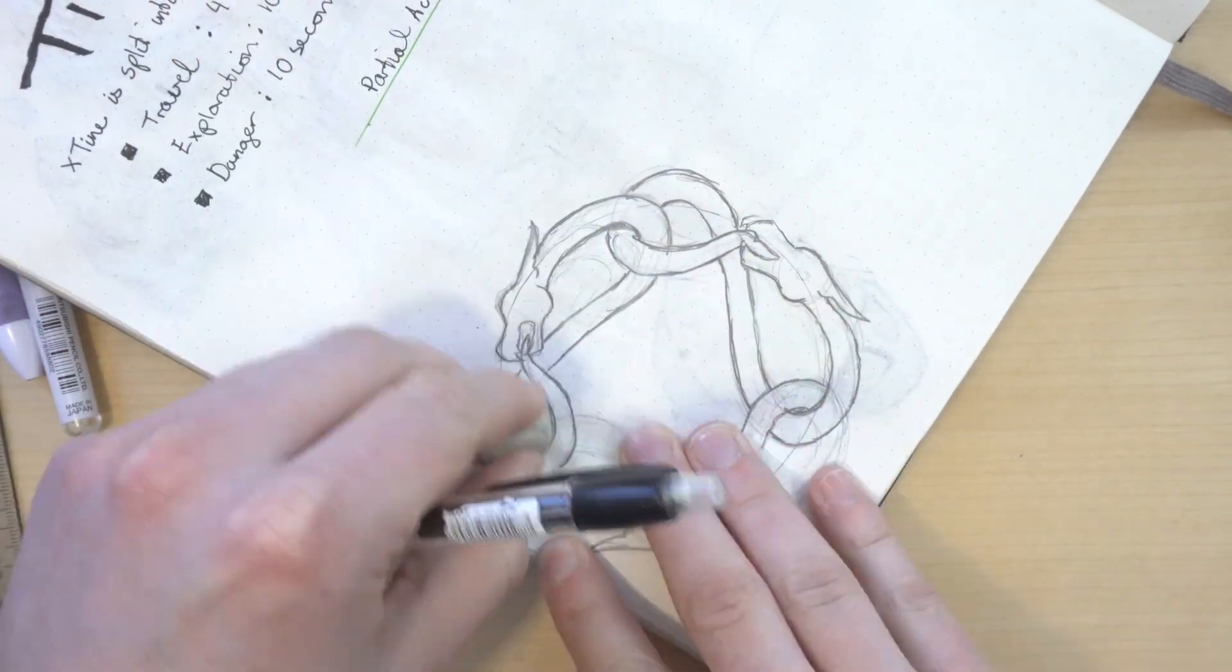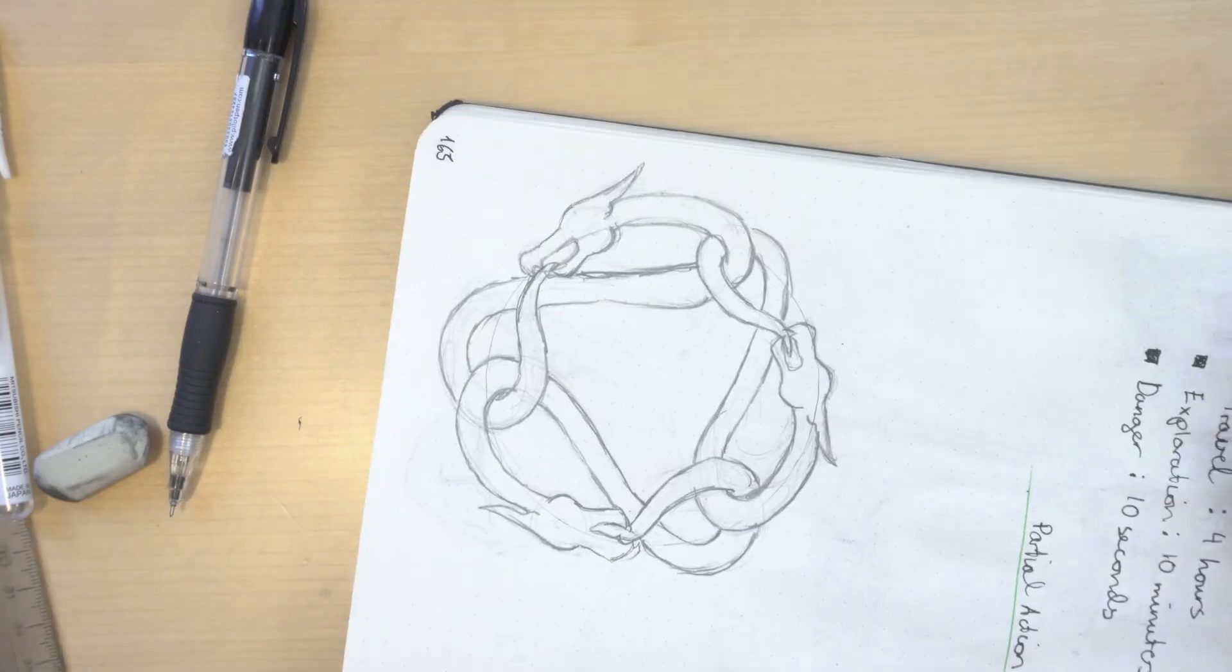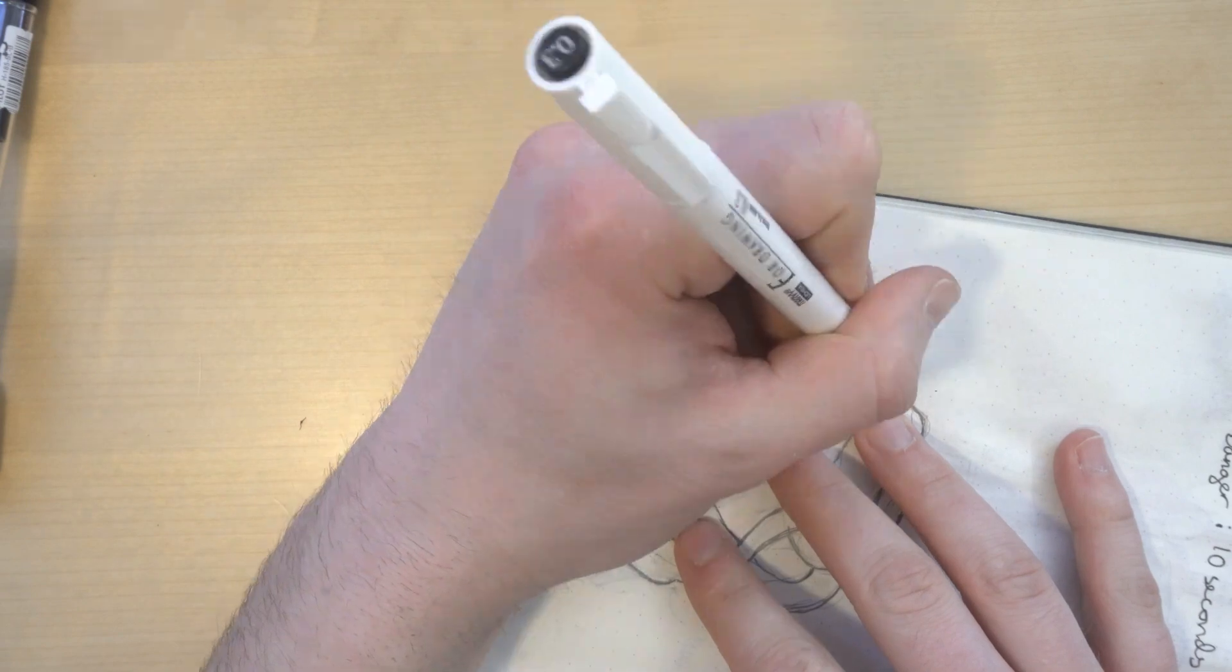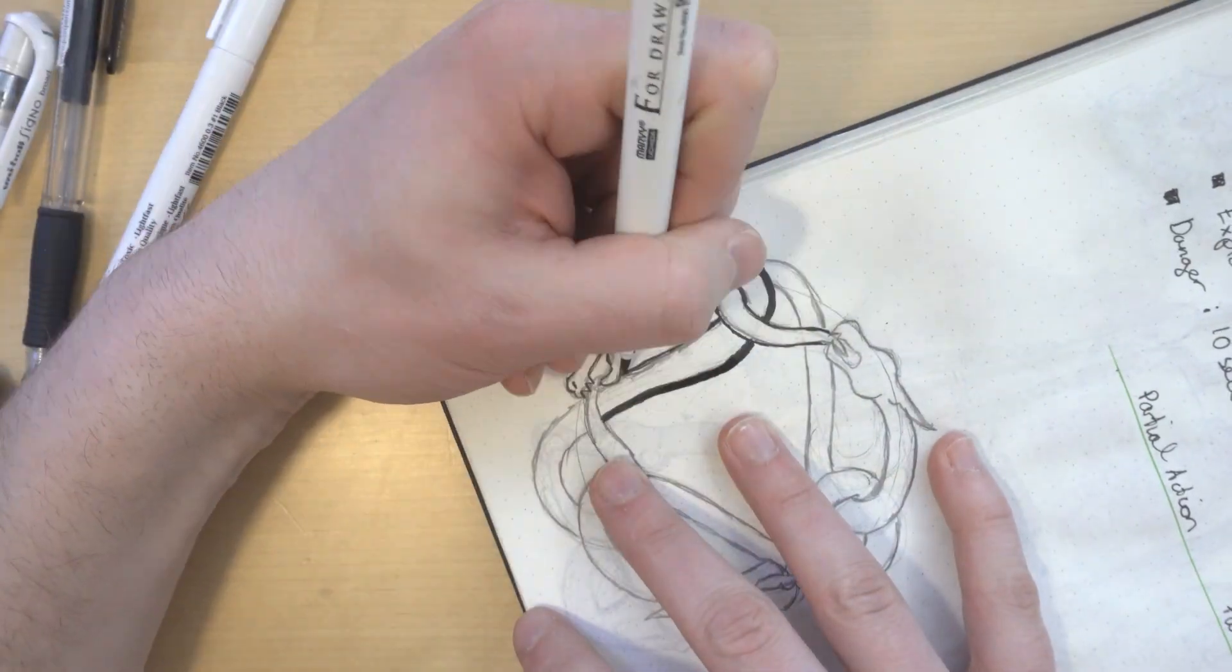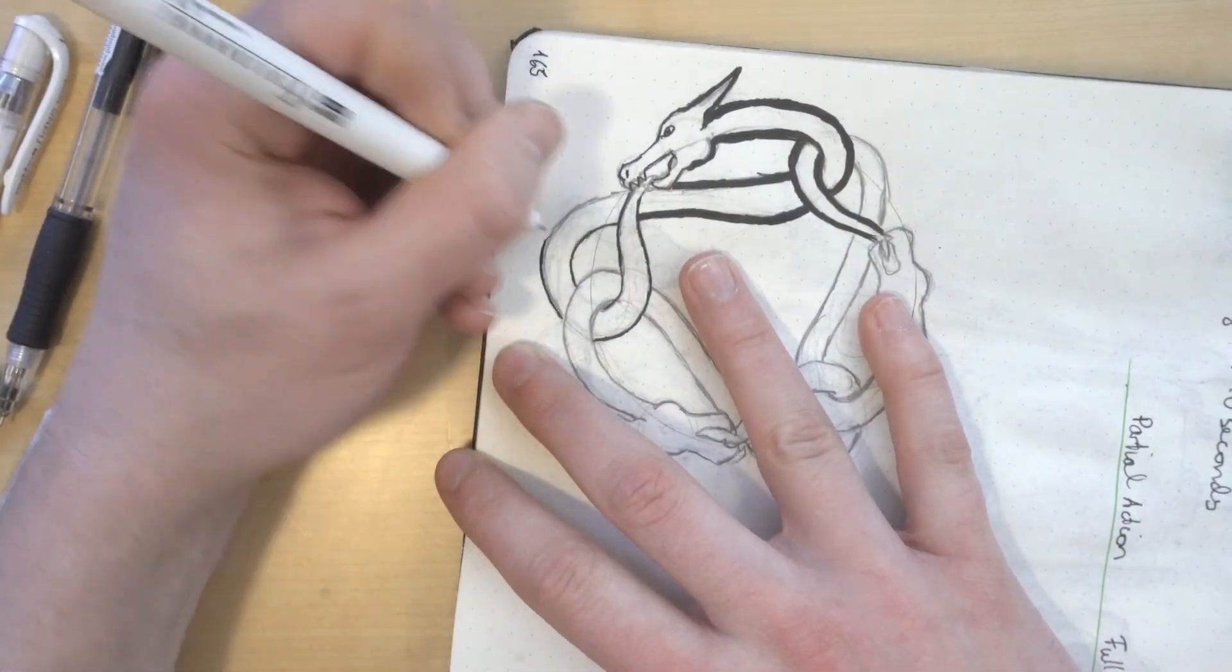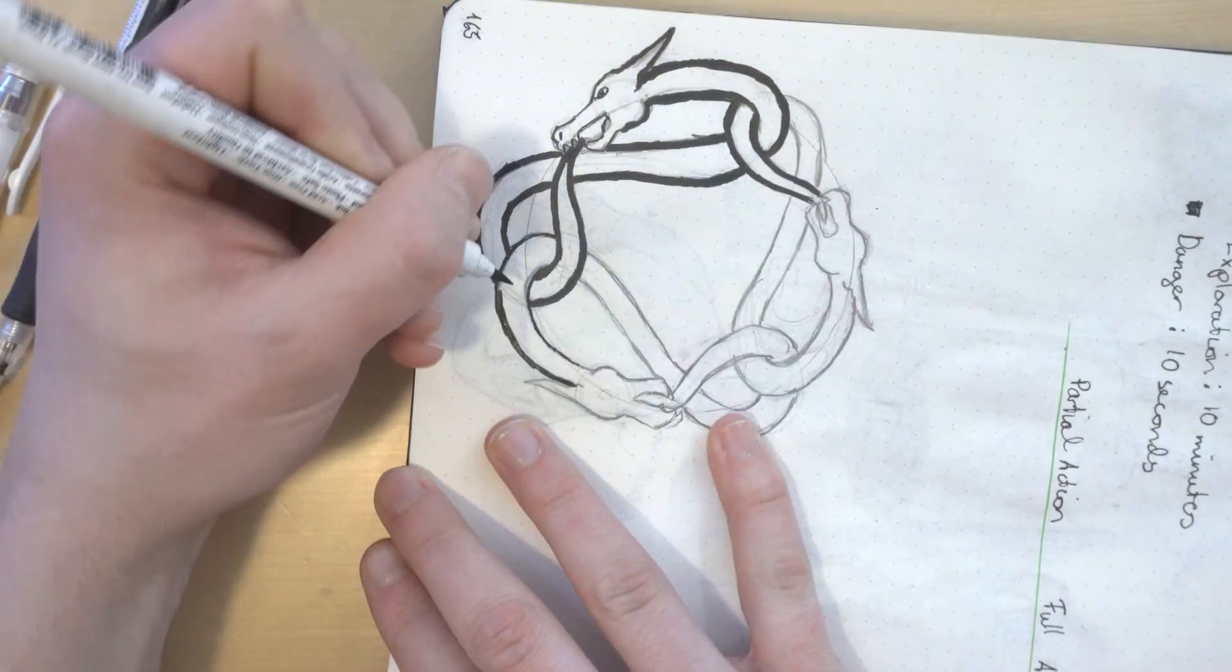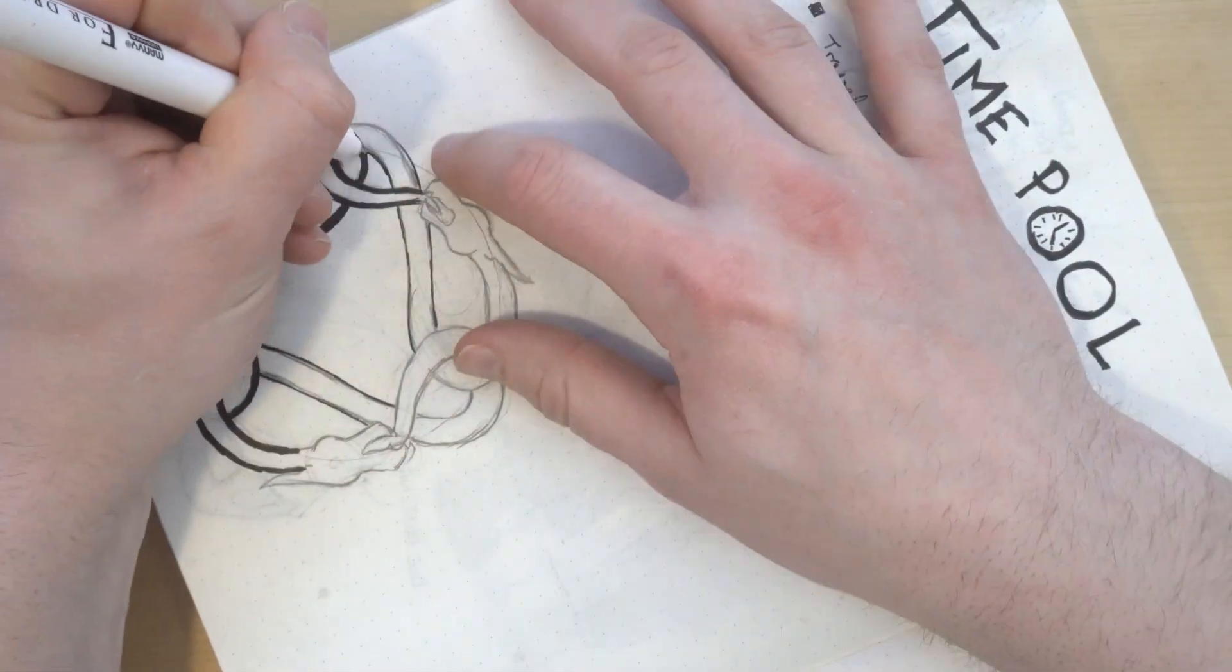So what do these rounds and actions have to do with anything? This is where the time pool and complications come in. Every round you as the GM add a die to the time pool. The die depends on the hostility or tension in the area. Peaceful places are d12, dangerous areas are d4. Once the time pool is six dice, you roll for complications and reset the time pool to zero dice.